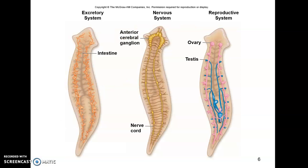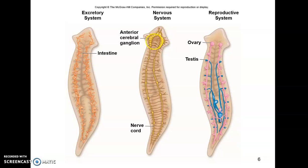These diagrams show some of the internal structures of a turbellarian. The excretory system is flame cells — all these little bulges here are flame cells. The nervous system is very simple: just ganglia concentrated at the anterior end, and then two tracks of nerve cords extending down the organism, kind of like a ladder. The reproductive system contains both ovaries and testes in every organism — they are hermaphroditic, though they still rely on copulation with each other.